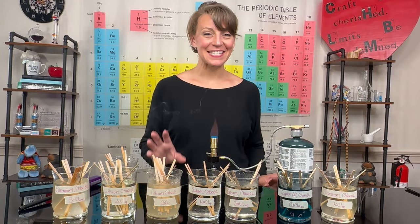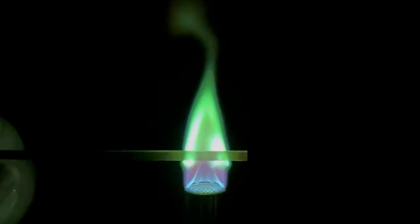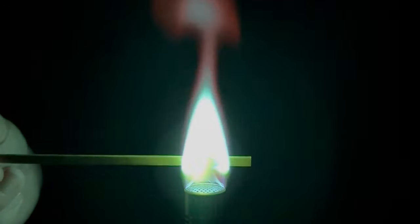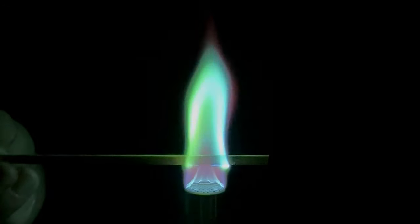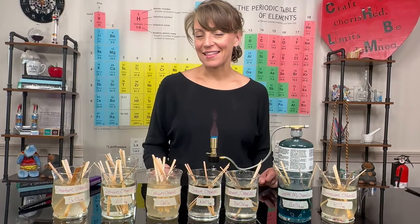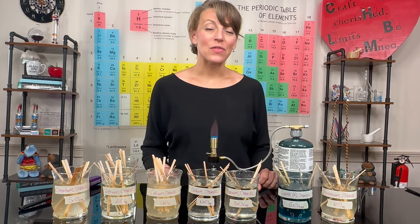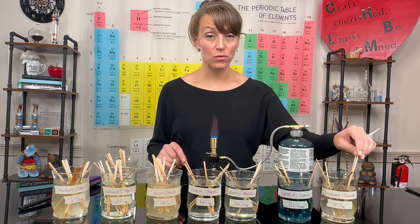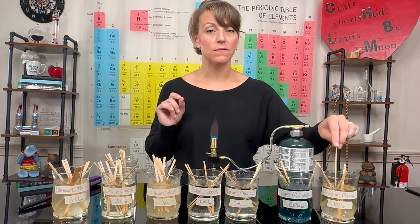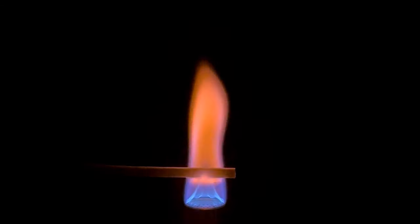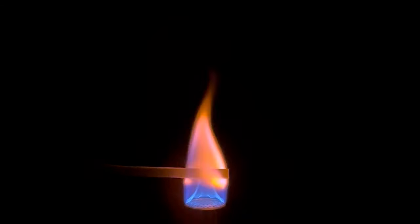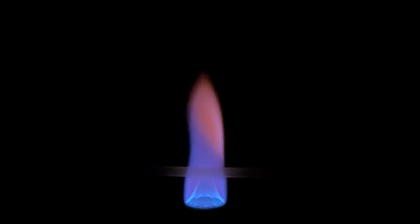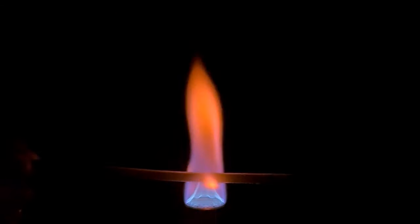Barium chloride creates an awesome green flame. And just wait until you see copper chloride — copper chloride produces a spectacular blue-green flame. I mean come on, look how pretty that is. Last but not least we have potassium chloride. With this one you have to be very observant because the color change, the true color change, is very faint. If you look closely on the outer parts of this flame you might see a light lilac or lavender color. This faint purple color is the true color of potassium chloride.